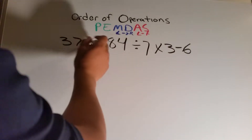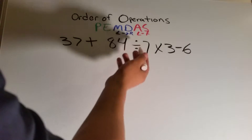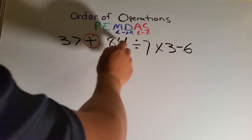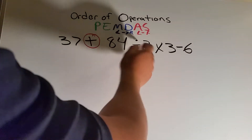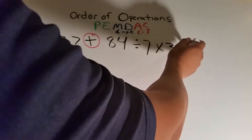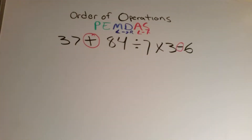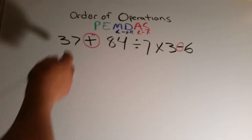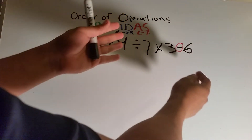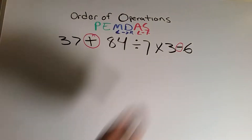So again, we have 37 — that's an addition sign with no parenthesis, so we're going to circle it. Then 84 divided by 7 — division, we're not going to circle it. Multiplication — we're not going to circle that either. But we have a subtraction sign at the end, so we're going to circle that. So now we have three chunks: 37, then 84 divided by 7 multiplied by 3, and then 6 at the end.